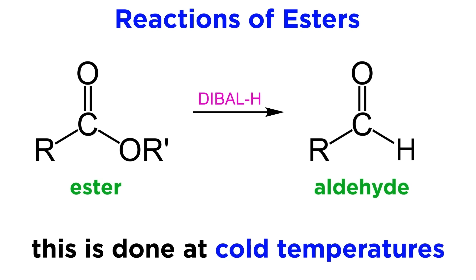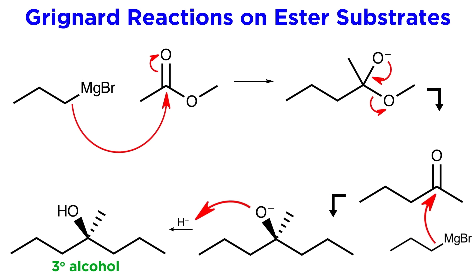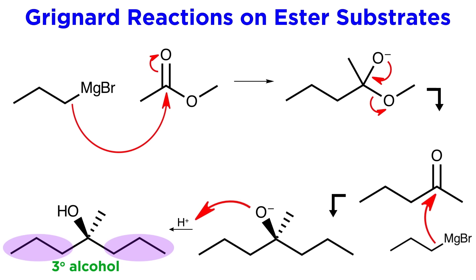This must be carried out at very cold temperatures. Finally, esters can be converted into tertiary alcohols using Grignard reagents. Two equivalents of the Grignard reagent must be used, because one will react with the ester to produce the ketone, and then another will react with the ketone to produce the tertiary alcohol, which will have two identical alkyl groups since they came from the two equivalents of the Grignard reagent.